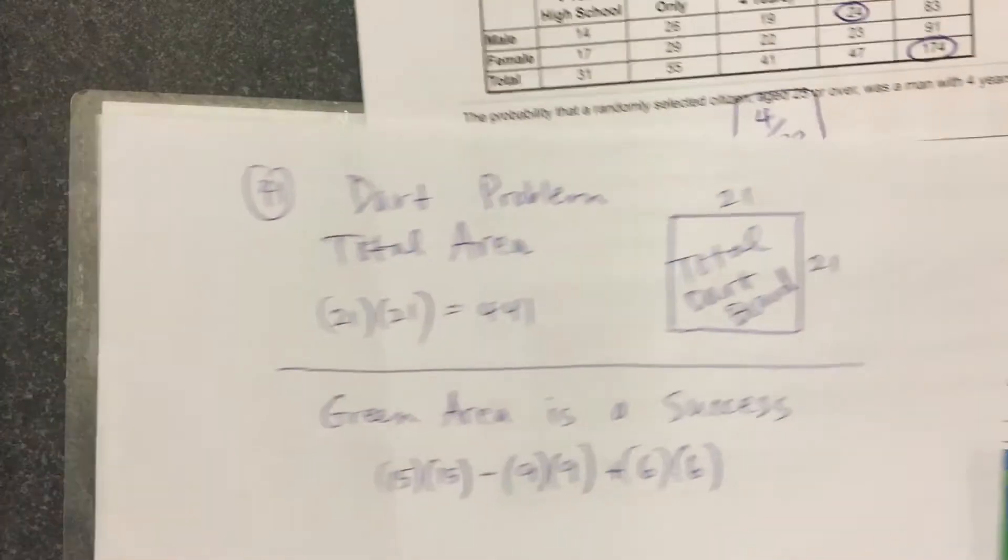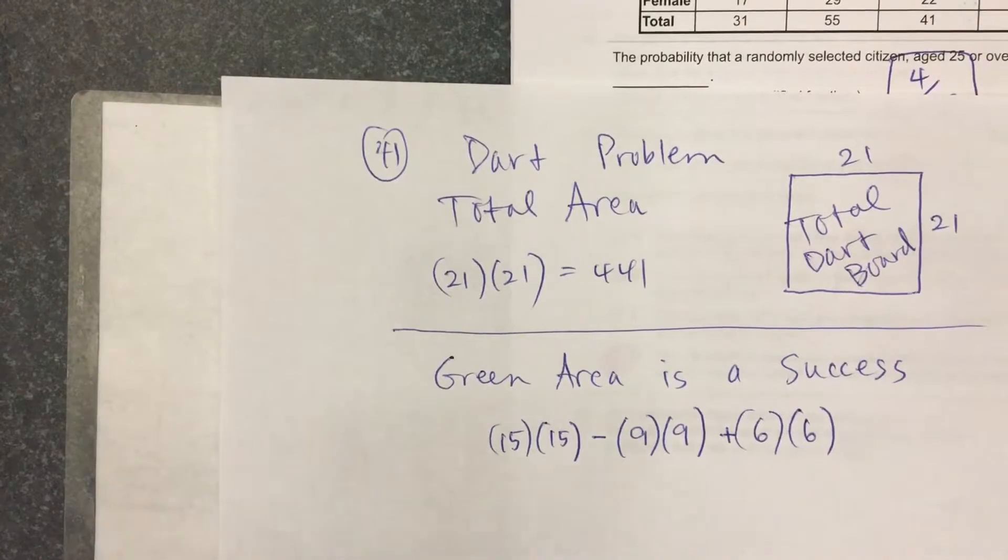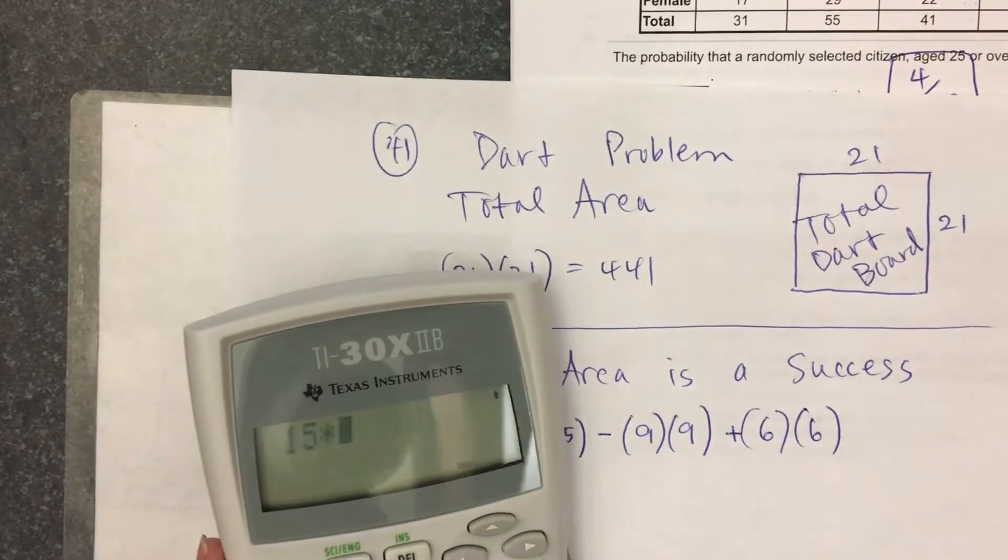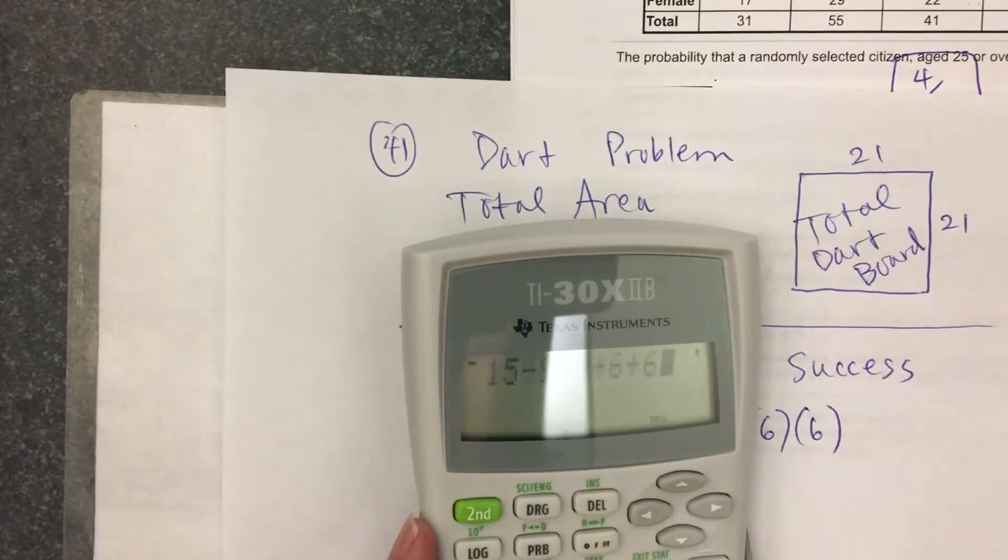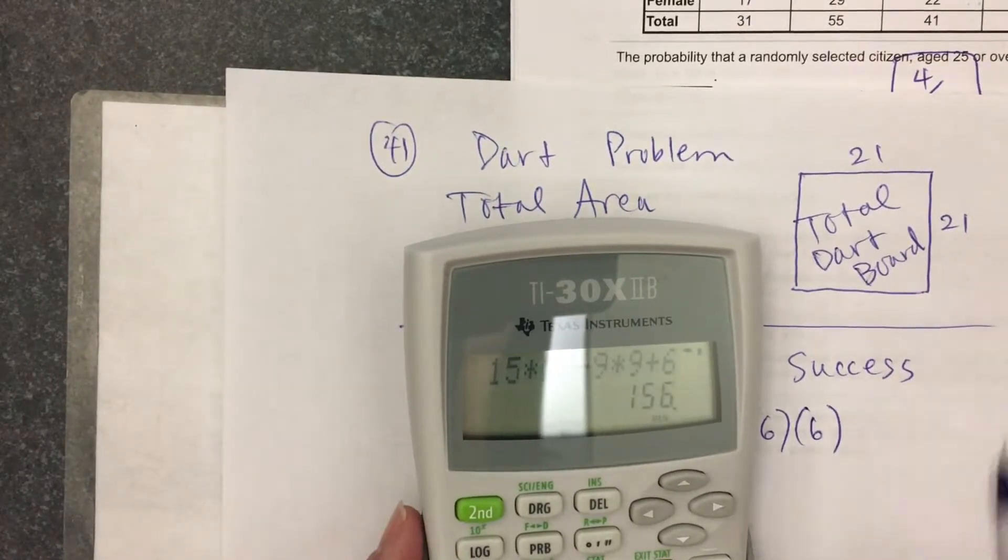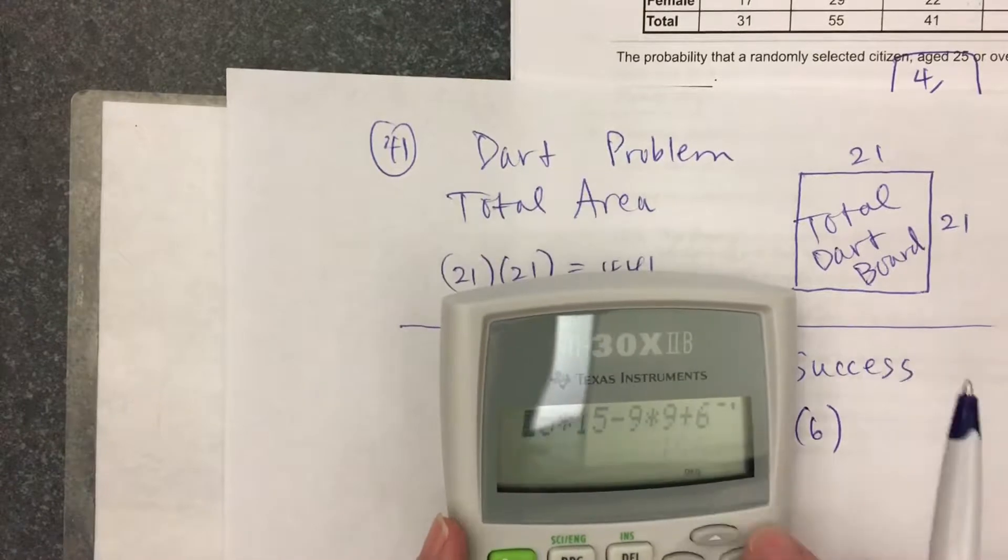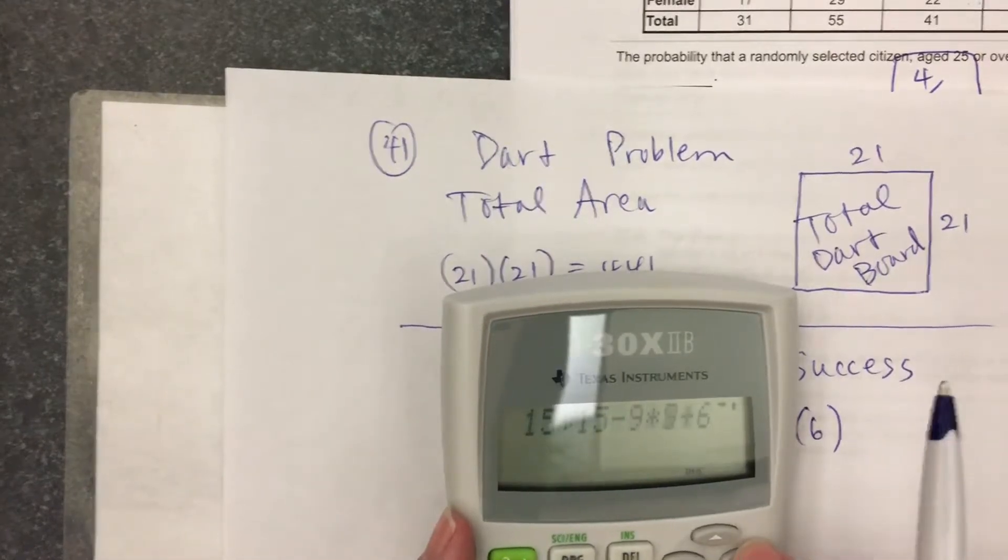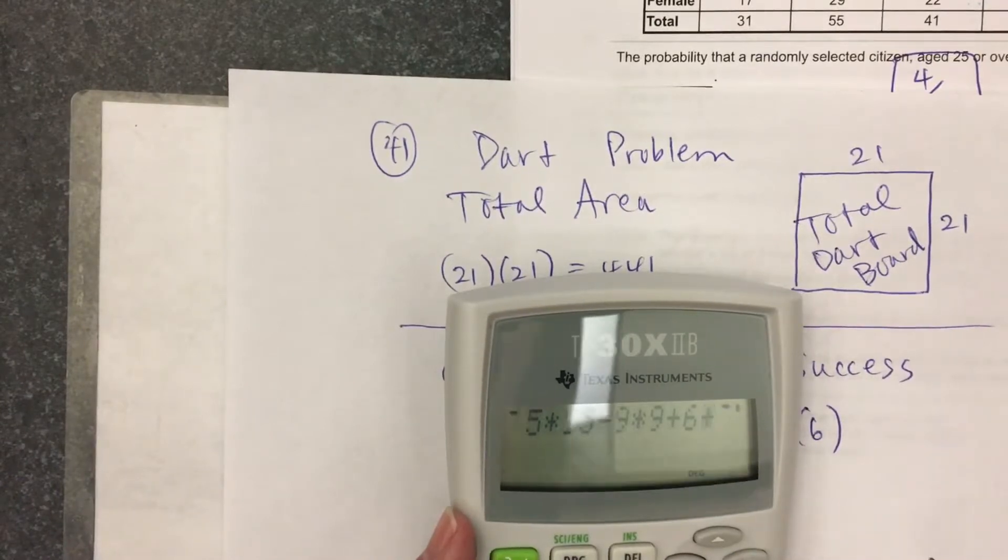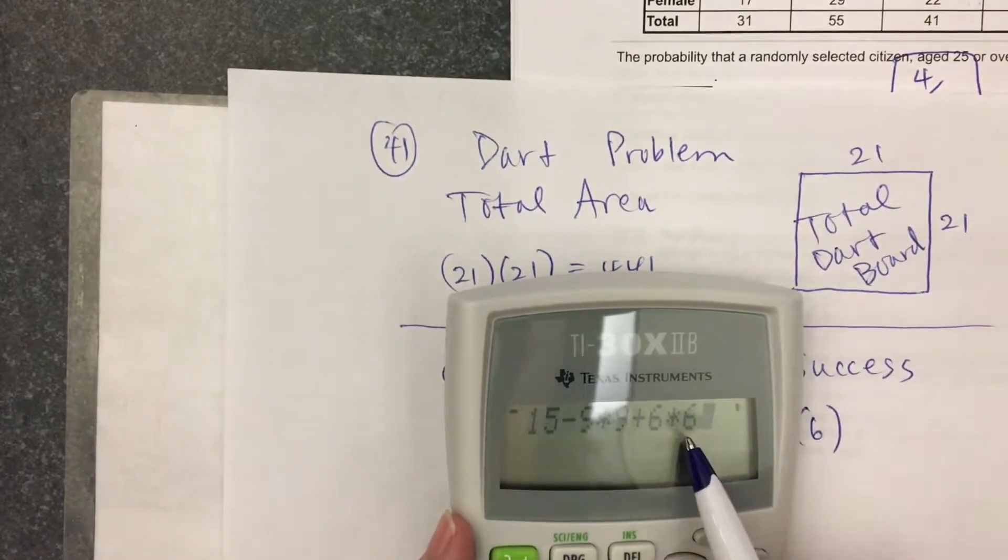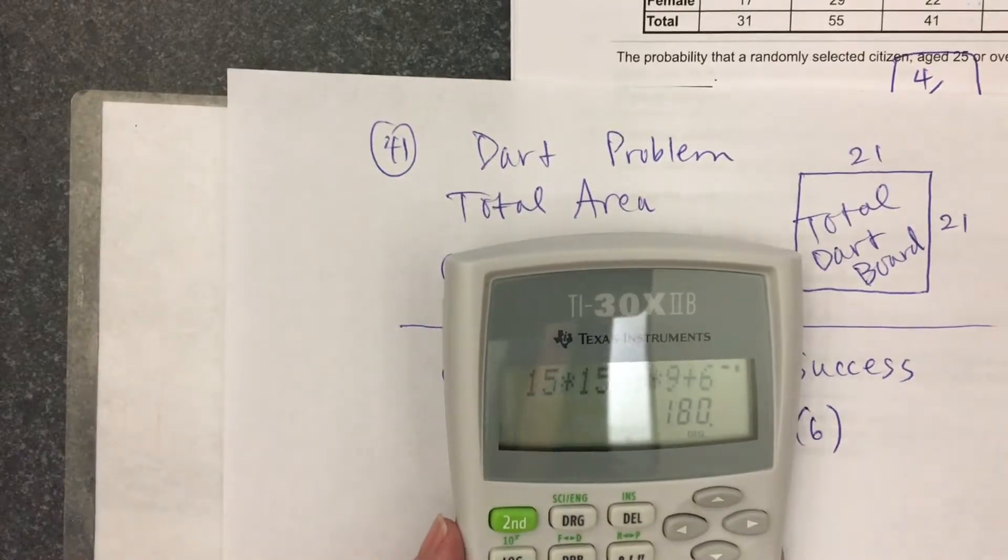They will always work out that way. 15 times 15 minus 9 times 9 plus 6 times 6. Oh, I wrote 6 plus 6. Let me go back up in my calculator. I just used my up arrow to get back to that problem and I changed that plus sign to a multiplication. 180.